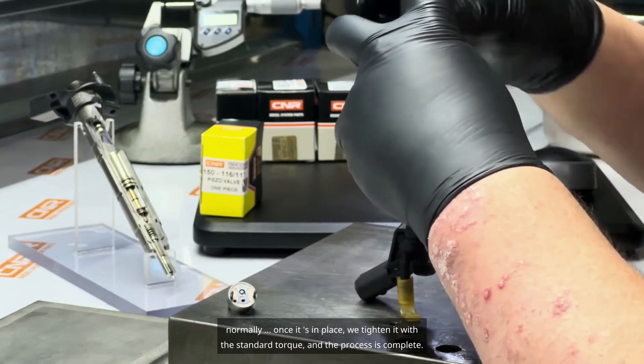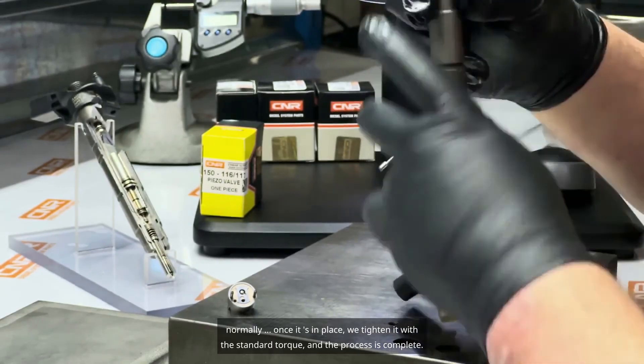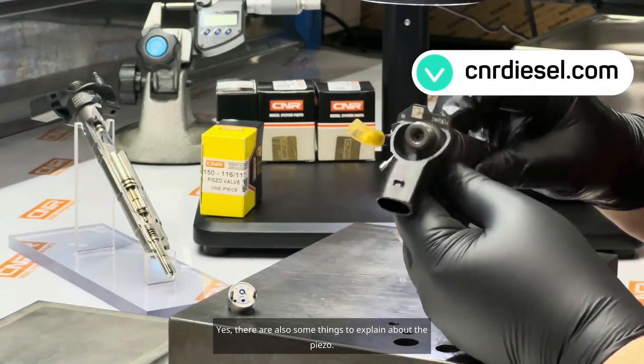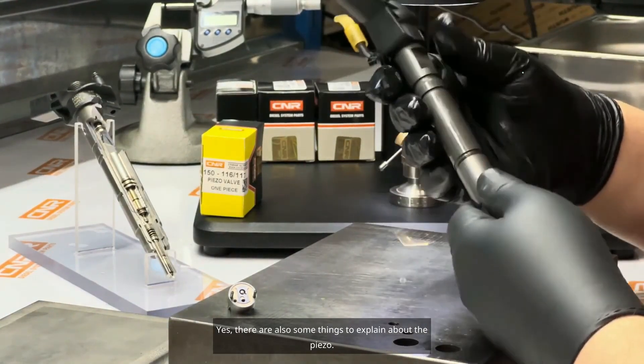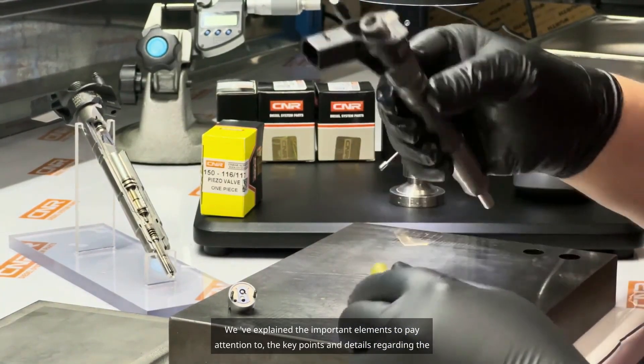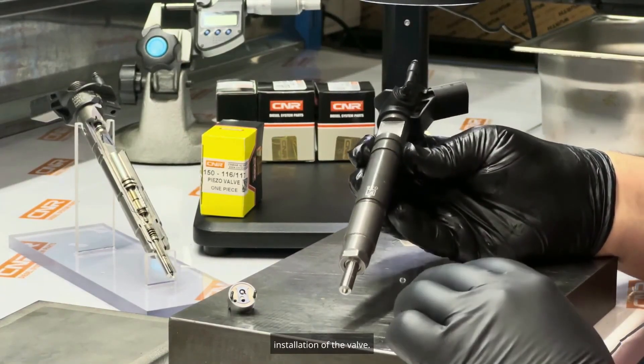Normally, once it's in place, we tighten it with a standard torque and the process is complete. We can move on to testing the injector on the machine. There are also some things to explain about the piezo. We've explained the important elements to pay attention to, the key points and details regarding the installation of the valve.